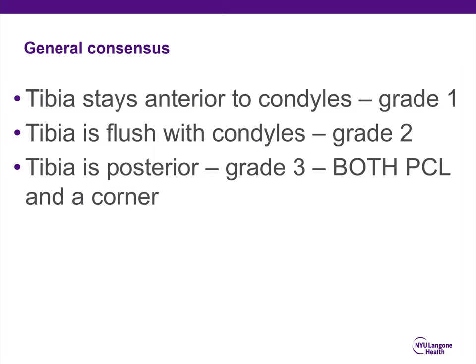In terms of grading of PCL injuries: when the tibia stays anterior to the condyles, that's a grade 1 injury; when the tibia is flush with the condyles, that's grade 2; and when the tibia is posterior, that's grade 3, which typically indicates both a PCL as well as a corner injury.